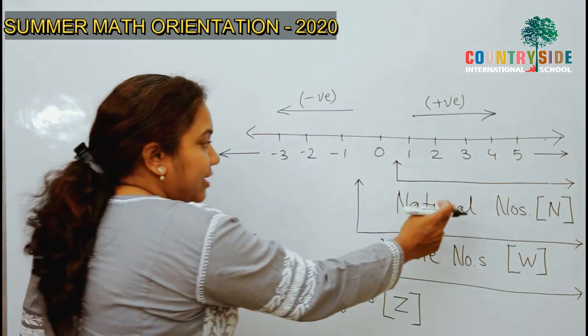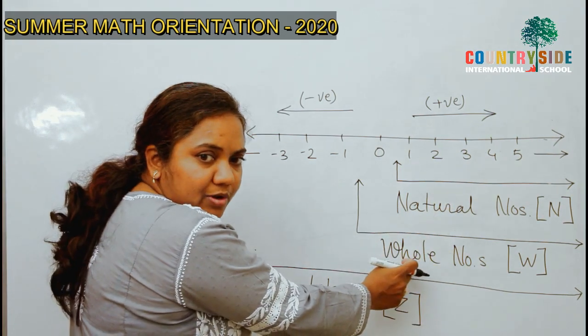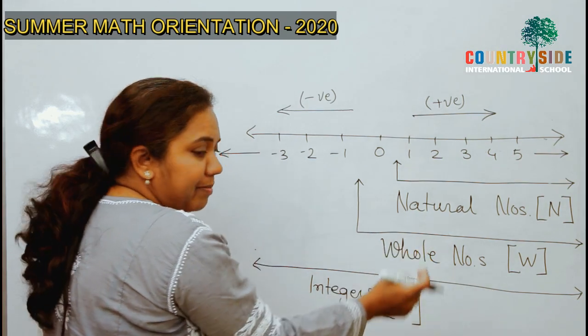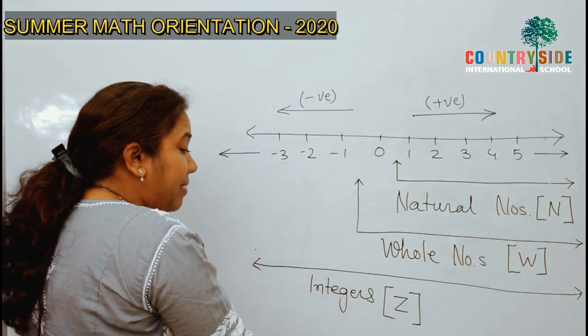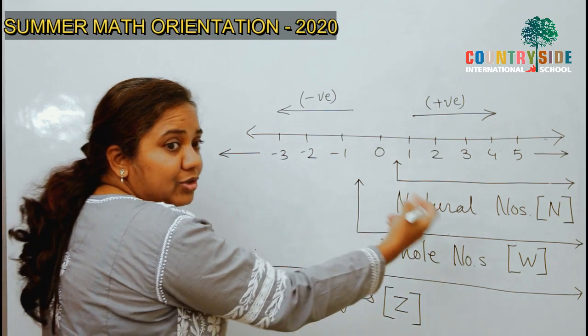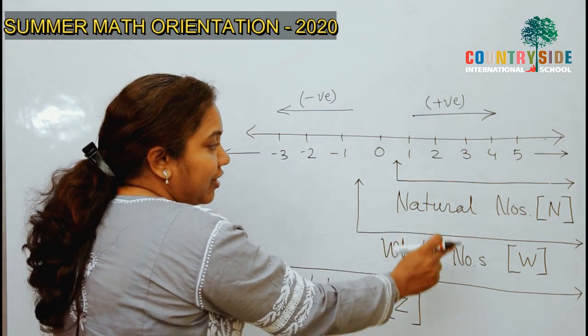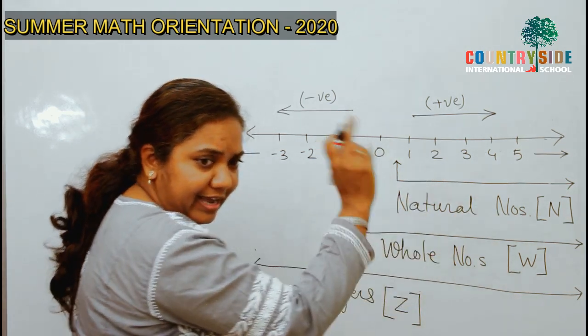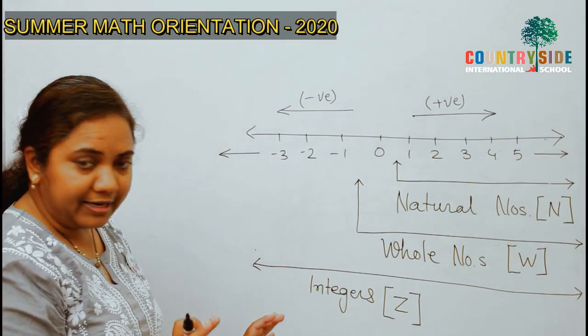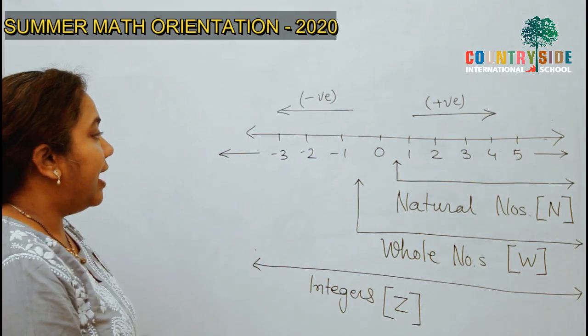So, all members of N are members of W. All members of W are members of Z. But, all members of Z are not members of W. And, all members of W are not members of N. That is clear now. Right?